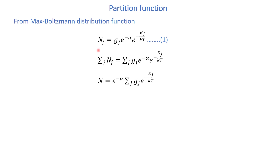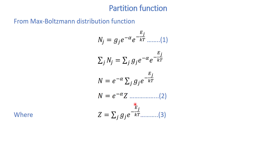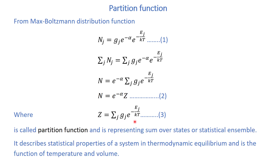Now let's take summation on both sides. This gives the total number of particles of the system, and e to the power minus alpha does not depend on j, so we can take it out of the summation sign. This summation is called the partition function, represented by Z. So equation number two: Z is equal to summation over j of gj times e to the power minus ej divided by kT, and it represents the sum over states or statistical ensemble.